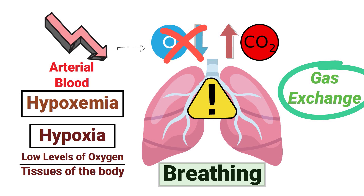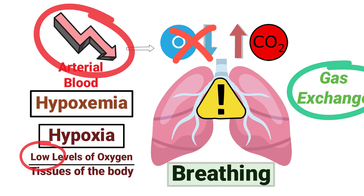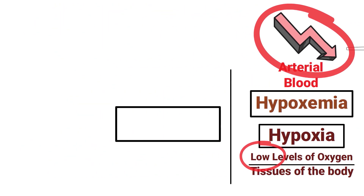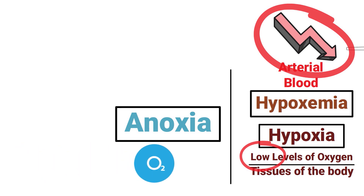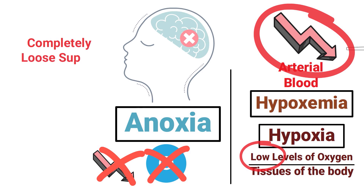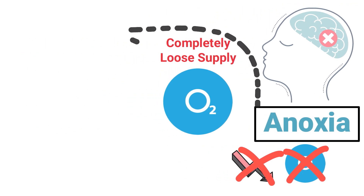Low is the key word for both of those terms, because anoxia, by contrast, refers to a total depletion of oxygen within the body — not low oxygenation, but a total depletion. This occurs when the brain and vital organs completely lose their supply of oxygen.